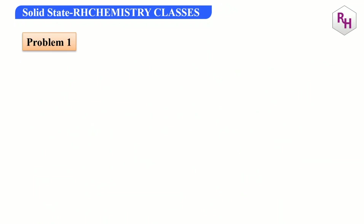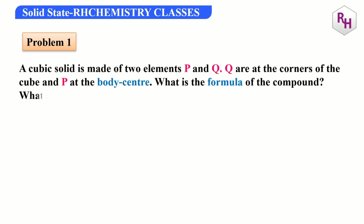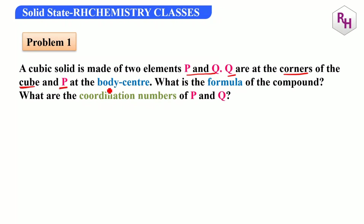First problem: a cubic solid is made up of two elements P and Q. Q atoms are at the corners of the unit cell, and P is at the body center. What is the formula of the compound and what is the coordination number of P and Q? For the body center, the coordination number is equal to 8.